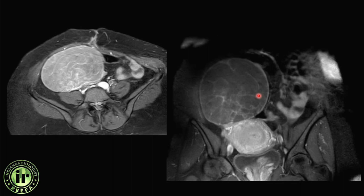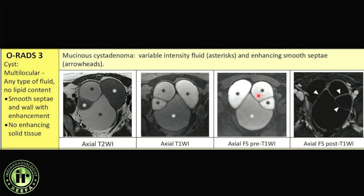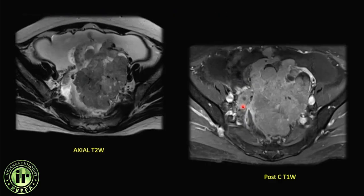A multilocular lesion with post-contrast septal and wall enhancement falls into ORADS 3. If the dynamic curve is still low grade, it remains ORADS 3. This example was a mucinous cystadenoma — still requiring histopathology as an ORADS 3 lesion. Importantly, mucinous tumors are typically unilateral and multilocular with proteinaceous contents appearing heterogeneous on T1, whereas serous varieties are more common and have greater tendency for peritoneal spread.